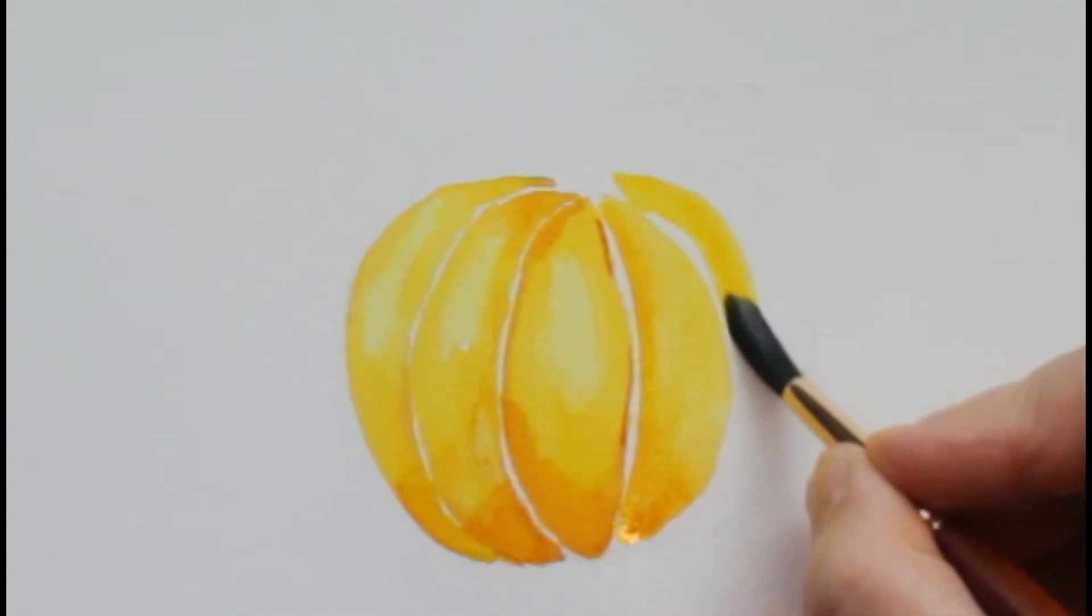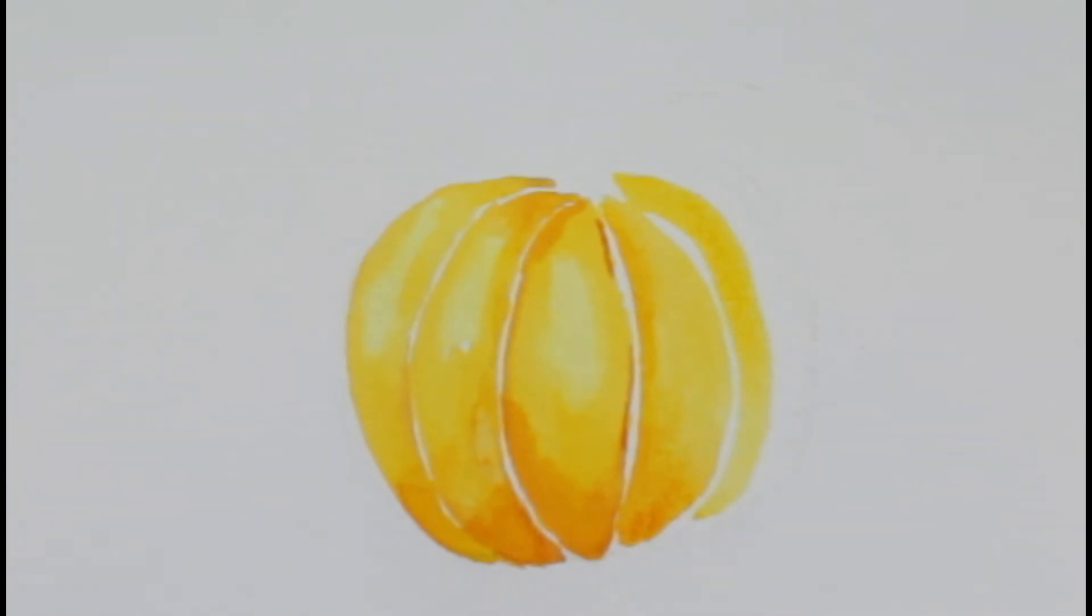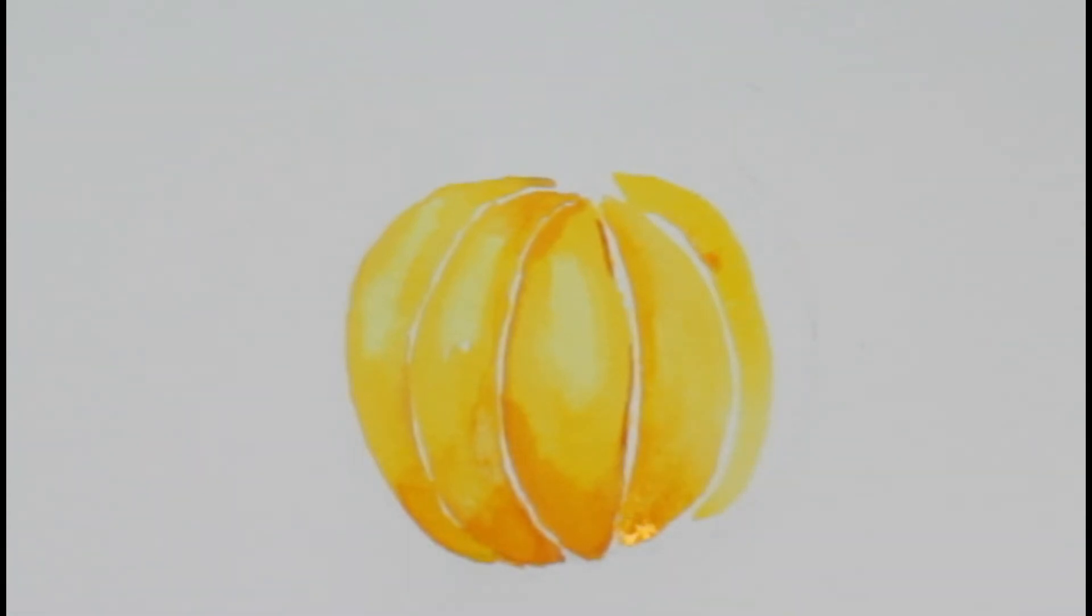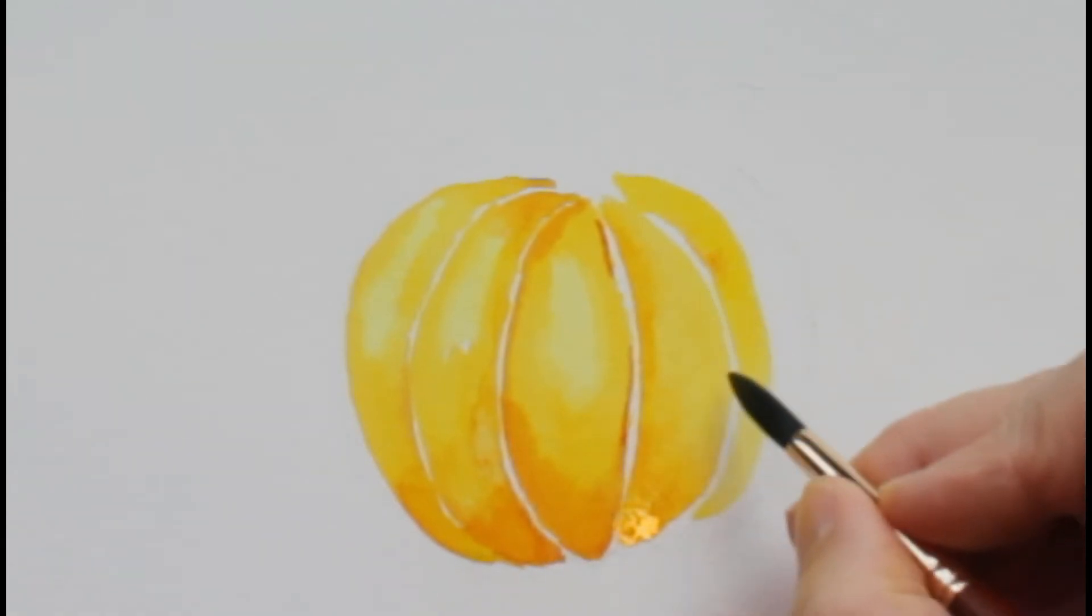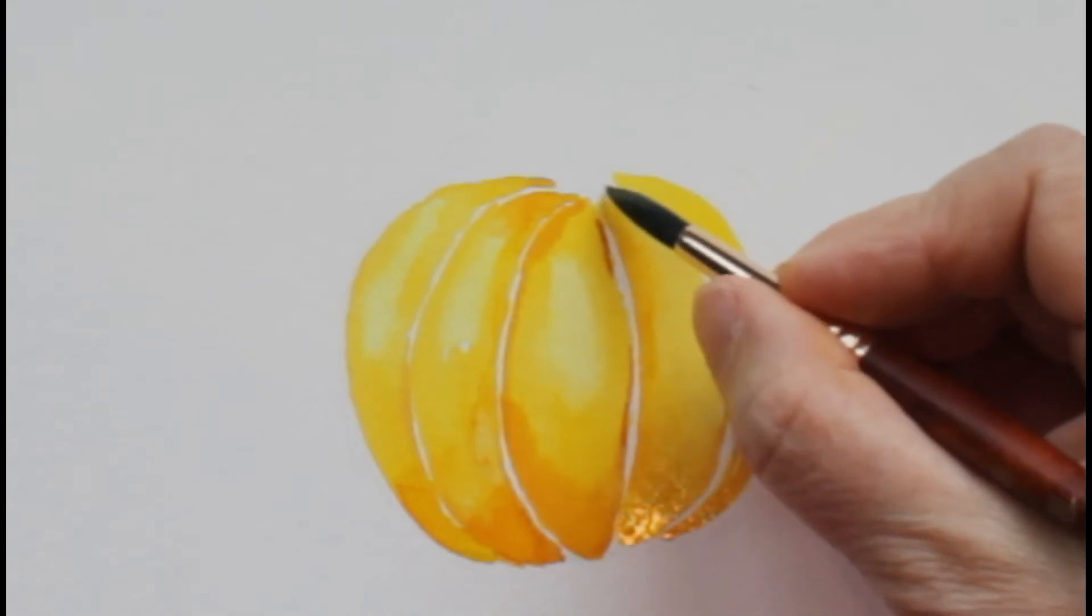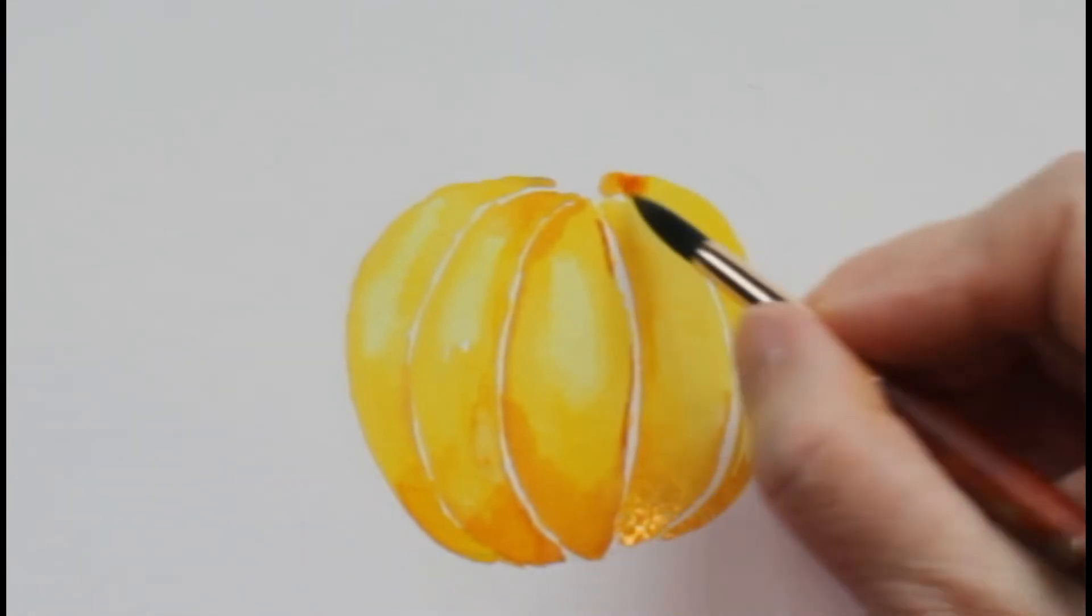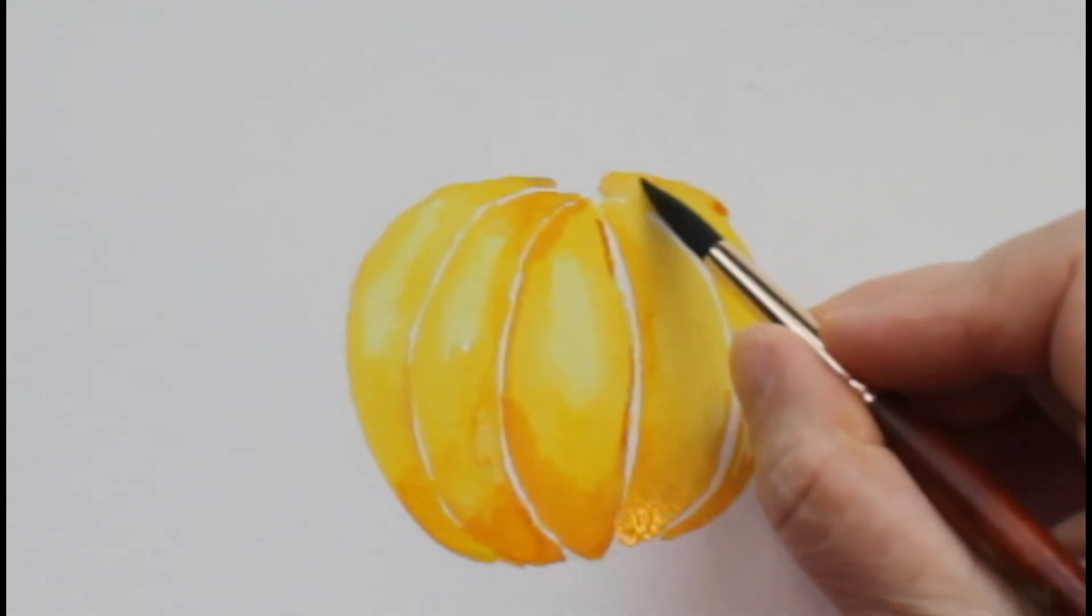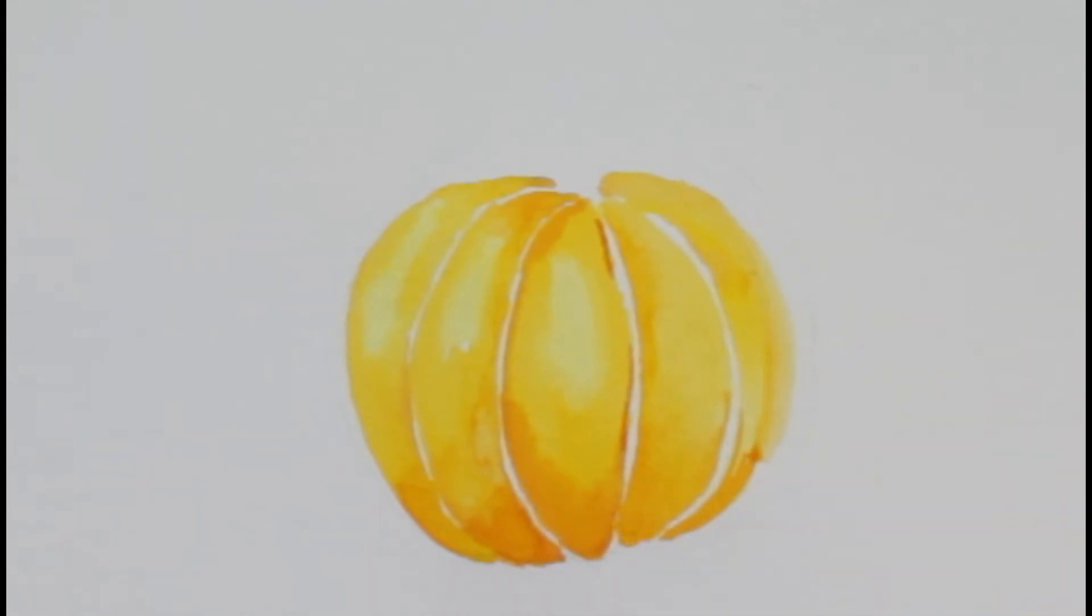You saw there was too much water there. That's a good example of too much water. I took a little bit of water off my brush, and now I'm getting more of a line again. Too much water. You can see that's too much water. Smoothing it out.